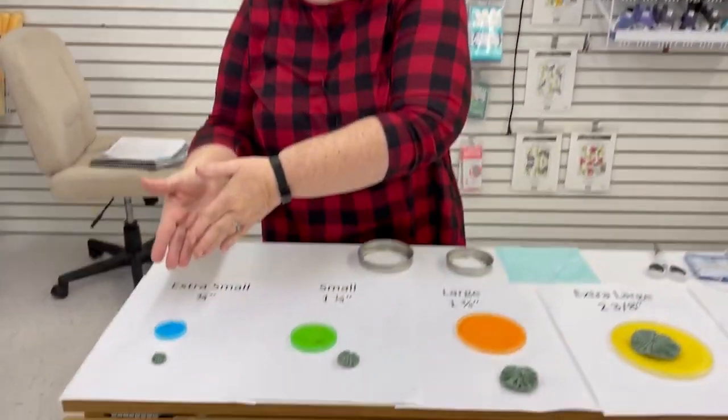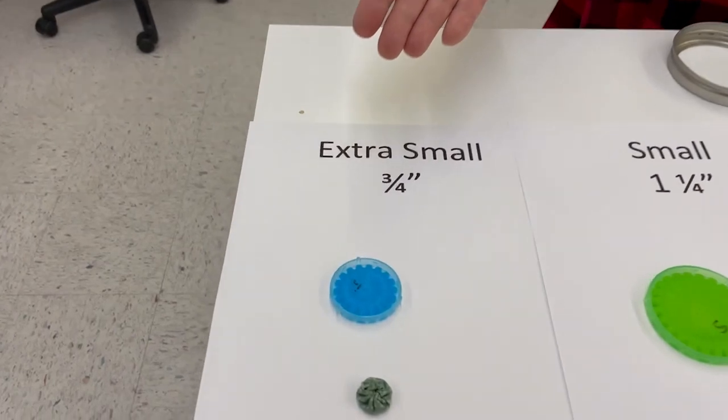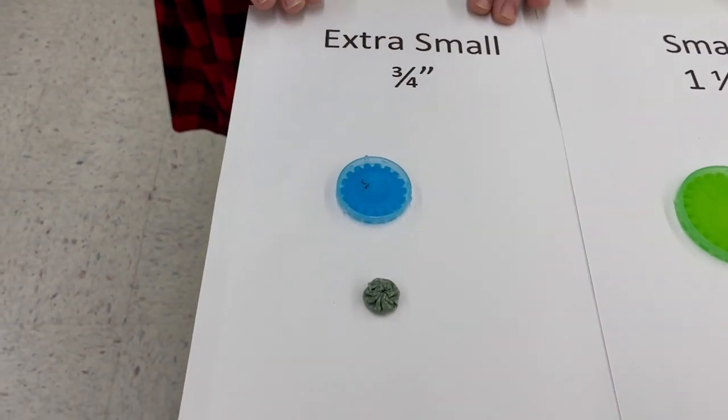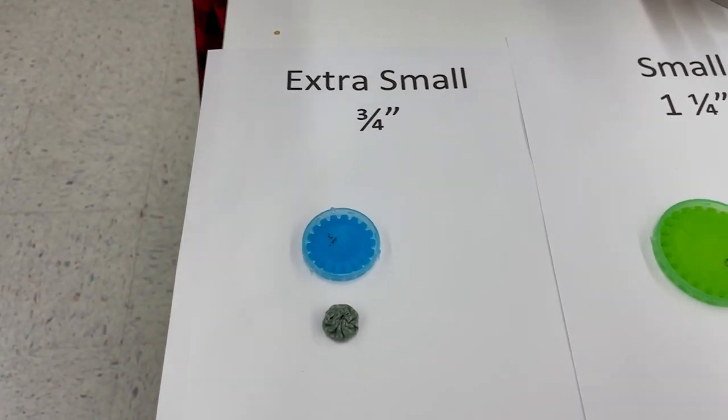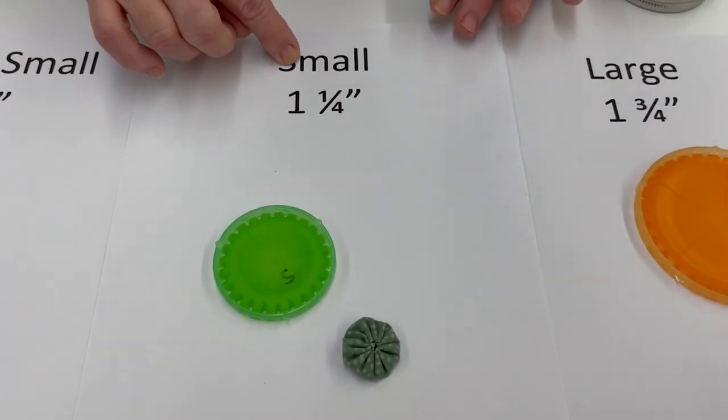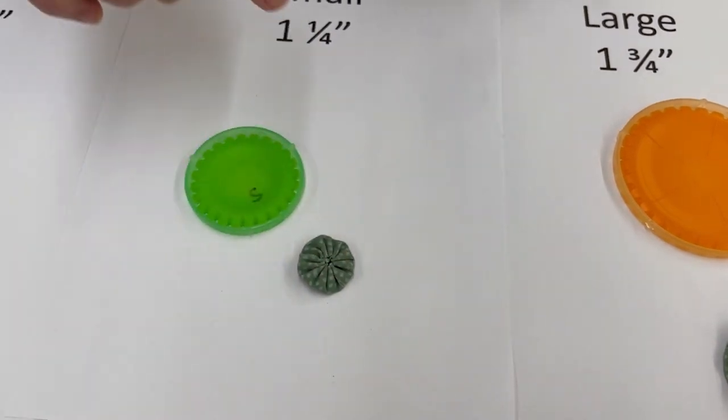Those worries are over. Clover has yo-yo makers. I've got them laid out here. They come in five different sizes. They start with extra small, which is three quarters of an inch, just that itty bitty one. Then it goes to small, which is an inch and a quarter.